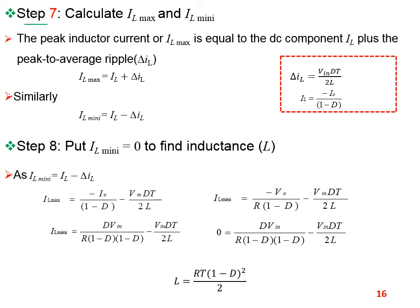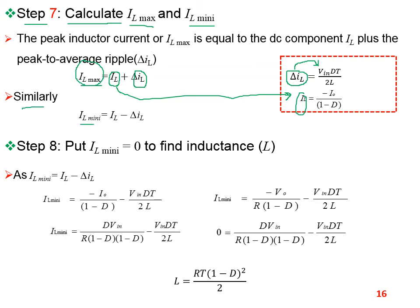Step number 7: calculate the maximum inductor current I_L_max and the minimum inductor current I_L_min. The maximum inductor current equals the DC component of the inductor current plus the peak-to-average ripple current delta_IL. For the buck-boost converter, I_L equals minus I0 divided by (1−D) and delta_IL equals V_in·DT divided by 2L. Similarly, I_L_min equals I_L minus delta_IL.